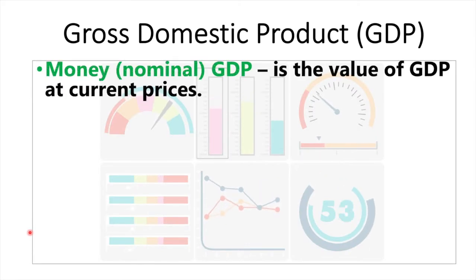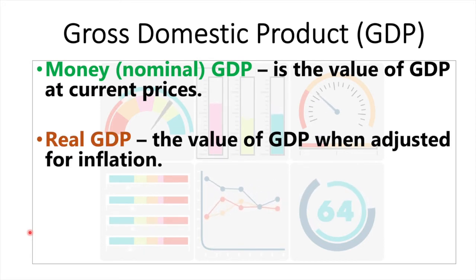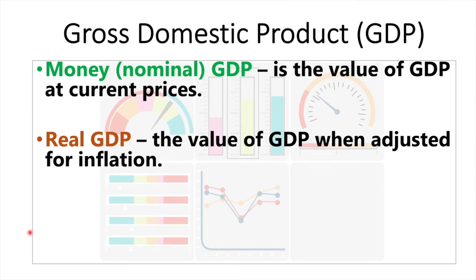Money or nominal GDP is the value of GDP at current prices — you use current prices to calculate the value of all goods and services produced. Real GDP is the value of GDP when adjusted for inflation, so we take nominal GDP and adjust it for inflation. We really care about this number when comparing the performance of an economy over time and to other countries, as real GDP gives us an accurate picture of how an economy is truly performing. For example, if prices have doubled then nominal GDP has doubled as well but real GDP has actually stayed the same. However, if prices have remained the same and nominal GDP has doubled, then there has been a doubling of real GDP.